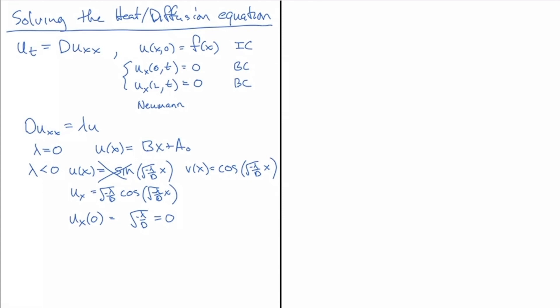However, the derivative of v(x), so v_x of x is equal to, now I get the minus sign, so minus square root of minus lambda over d times the sine of square root of minus lambda over d times x, and now I want v_x of zero to be equal to zero, but that's already equal to zero, because the sine evaluated at zero gives me zero.